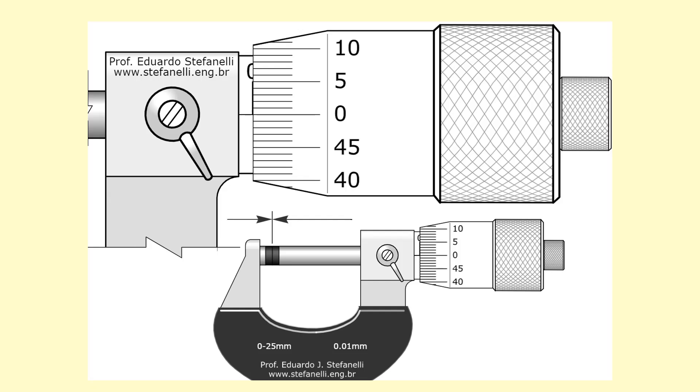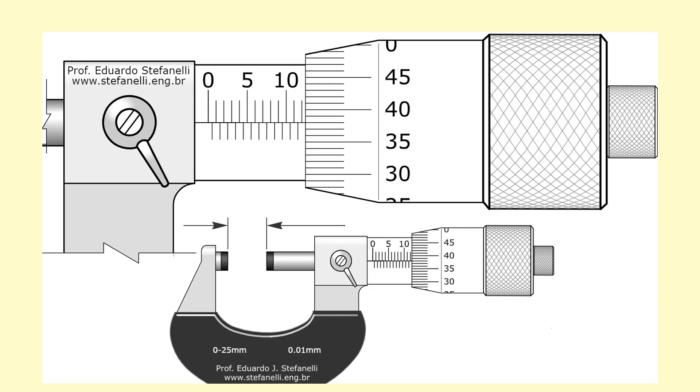Before you take any readings, you need to check for any zero error. Close the jaws of the micrometer and it should read zero. How do you check that? This line here should be aligned with the zero which you can see is over here. You also check that this zero here is aligned with this one here. That means it's reading zero; otherwise you'll have to recalibrate the whole device.